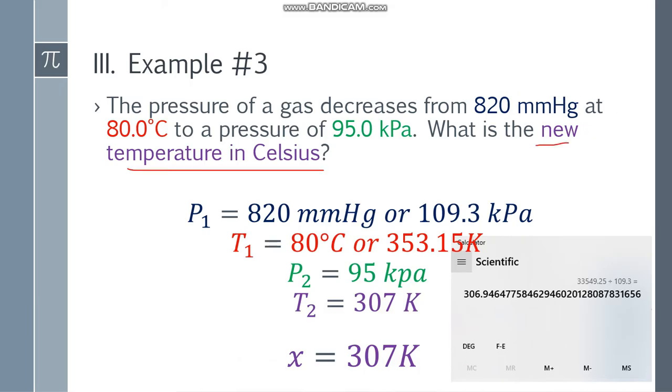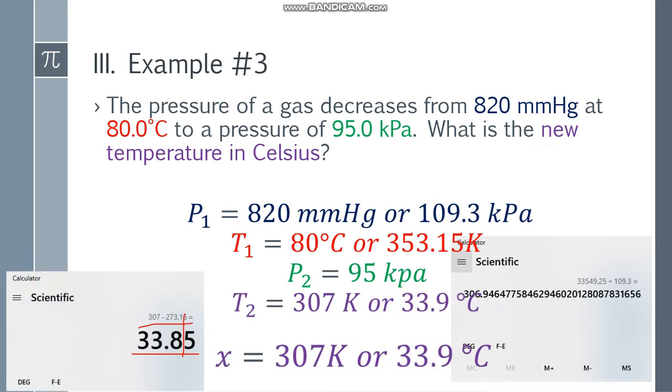So 307 Kelvin. And take note, it asks what is the new temperature in Celsius? So we need to convert back from Kelvin to Celsius by subtracting 273.15. The final answer will be 33.85. The least significant figures here is 3. So 1, 2, 3, cut. Since it's 5, round up. The answer is 33.9 degrees Celsius.